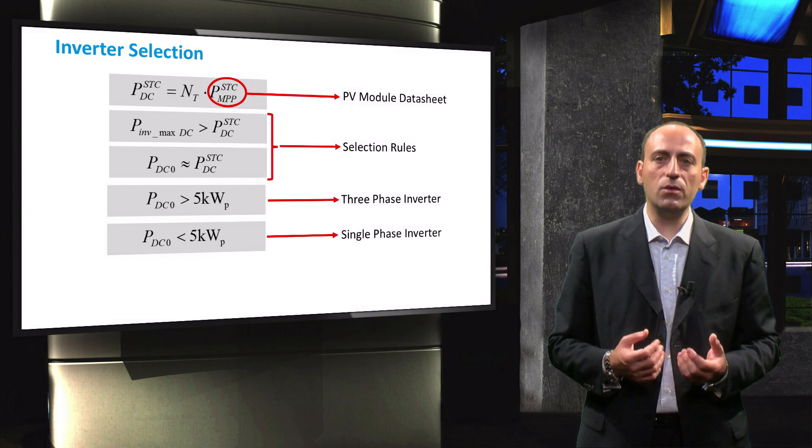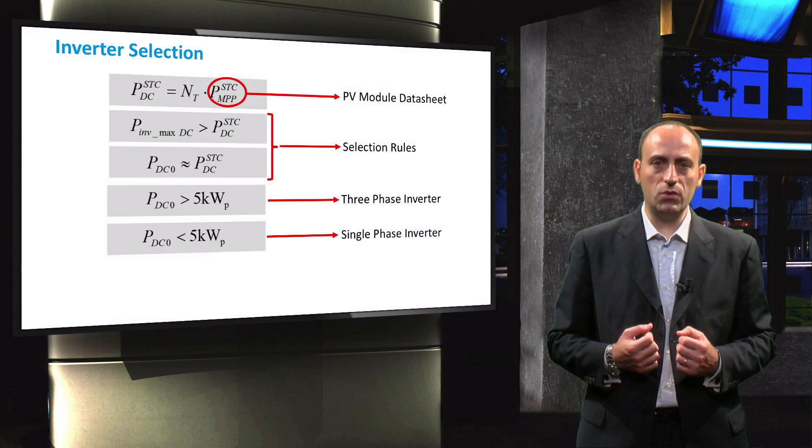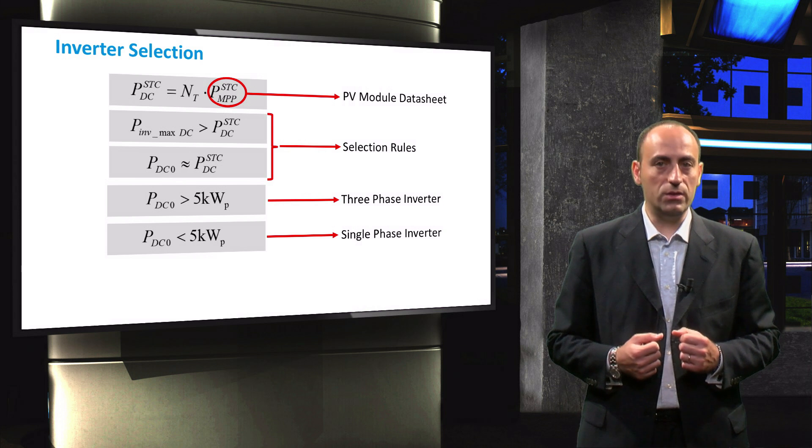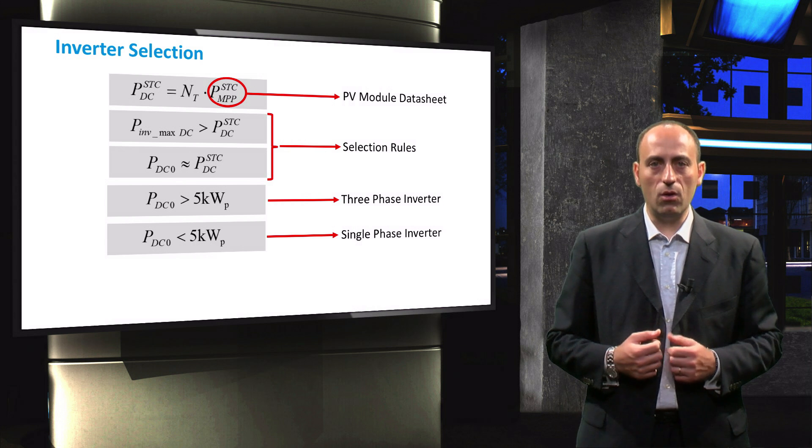Based on these criteria, a suitable inverter can be selected from the market or from the inverter database maintained by Sandia National Laboratory. From the selected inverter, we obtain two important parameters for our grid-connected system design: the nominal AC power, PAC0, and the nominal DC voltage, VDC0, of the inverter.